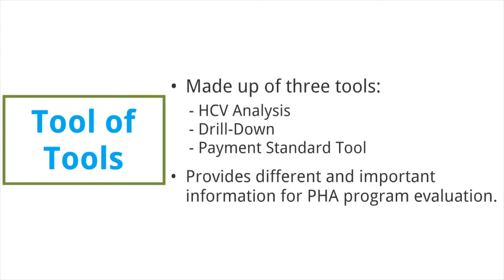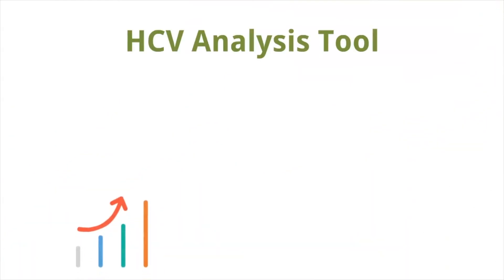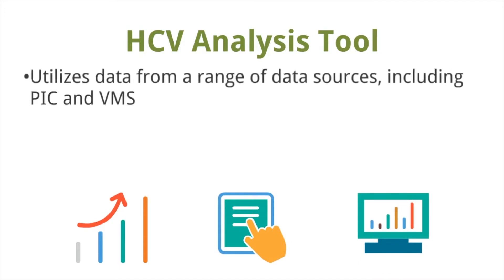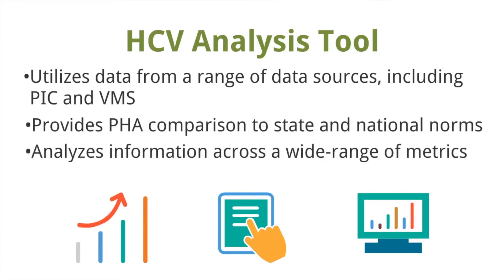The information in the Two-Year Tool, and more broadly, helps run an optimized HCV program. The HCV Analysis Tool uses a variety of data sources to create a report of the PHA Voucher Program, ripe with analytical data. The tool compares the PHAs' performance to other PHAs in the state and country, and also displays a variety of demographic information.